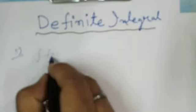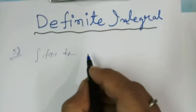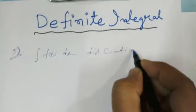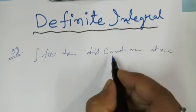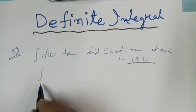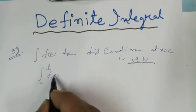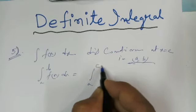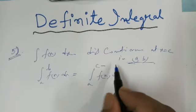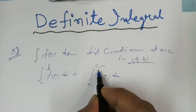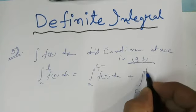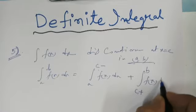If integral f(x) dx is discontinuous at x equal to c, where c belongs to the interval (a, b), then you can write the integral from a to b of f(x) dx as: integral from a to c-minus of f(x) dx plus integral from c-plus to b of f(x) dx, because this function is discontinuous at c.